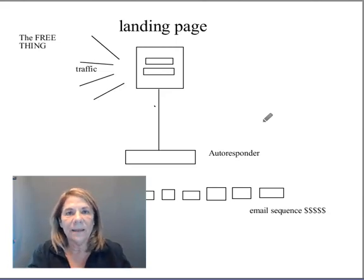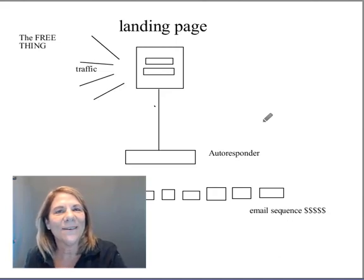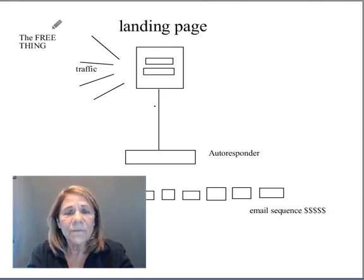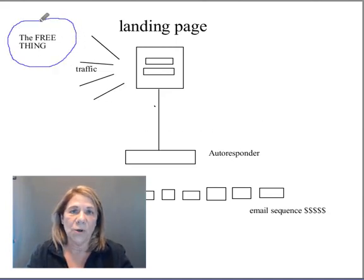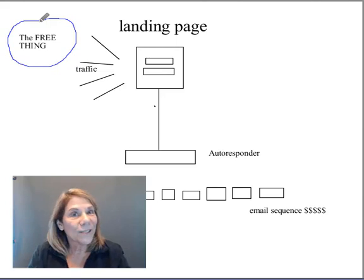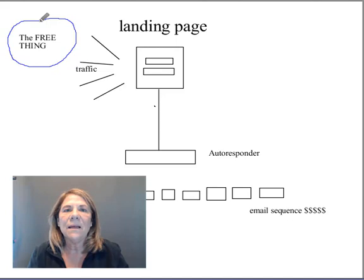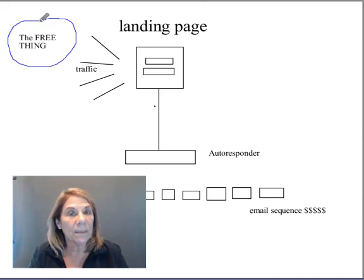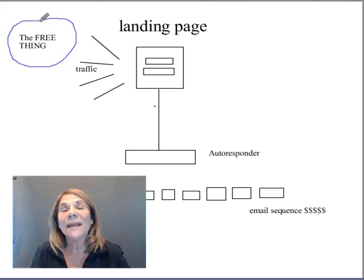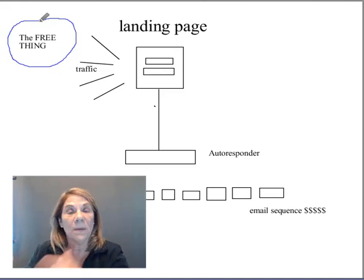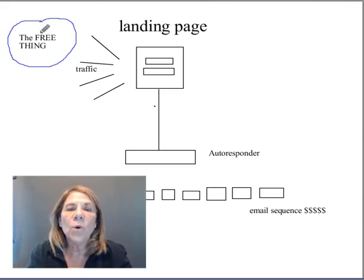Let's go over how you build an email list. First, you have a free offer — a checklist, a PDF, an ebook, or a course. I get most of my results from offering free courses, so the bigger that free thing is, the better. The online marketing industry is becoming more competitive, so you have to out-give everybody else. Think: what can I give that's better than what so-and-so is giving, so people will click my link instead?